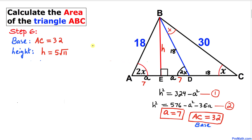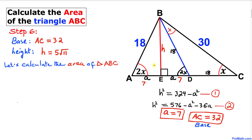We found the base of triangle ABC is 32 and the height is 5√11. Using the area formula: Area = ½ × base × height.